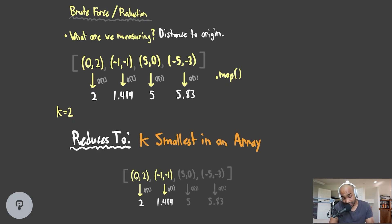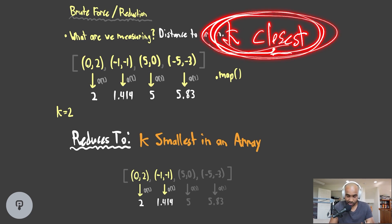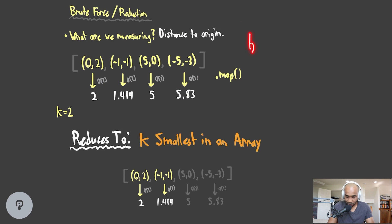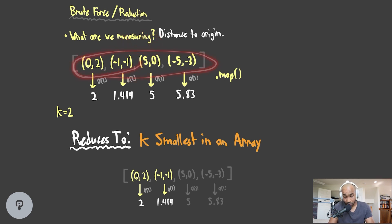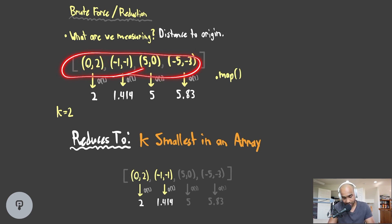The most immediate thing is: what are we measuring? We're measuring the distance to the origin, and we're asked what are the k closest items. So how can I convert these quantities into scalar quantities — singular numbers we can compare? I'll need to do some comparison between these items. The best we can do is going to be linear time at minimum — we have to look at all the points, because the last item or first item might have the smallest distance.